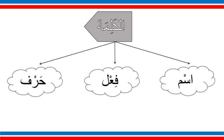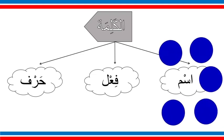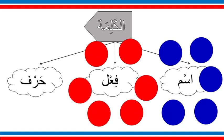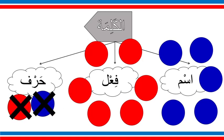For each type we have signs, alamat — think of them as filters. We have five signs for ism. If the word accepts any one of these filters, it is a noun. If not, we move to the next set: we have six filters for fi'il. For harf we don't have any signs — if a word doesn't accept the signs of ism or fi'il, it is harf.